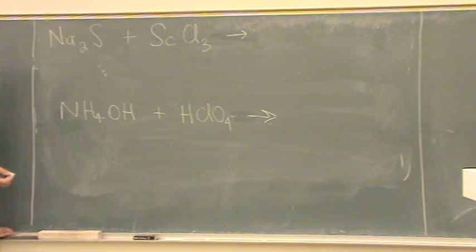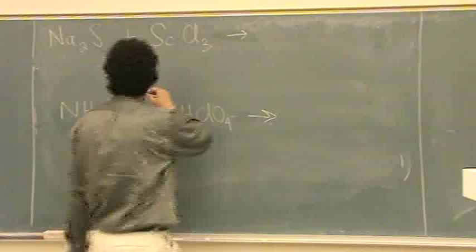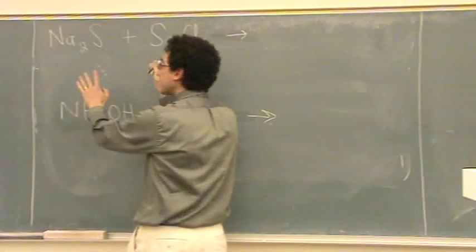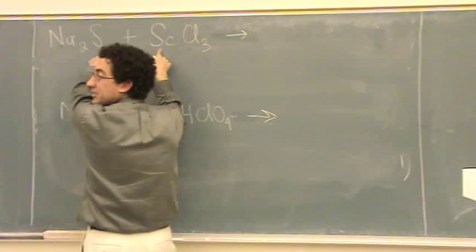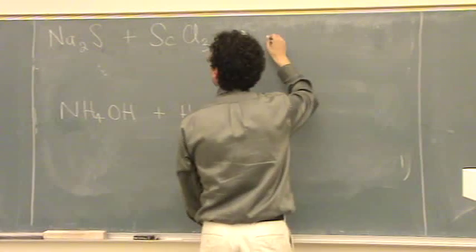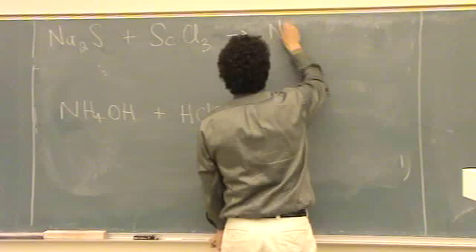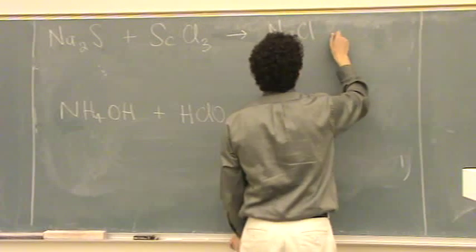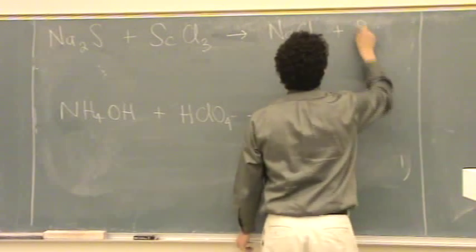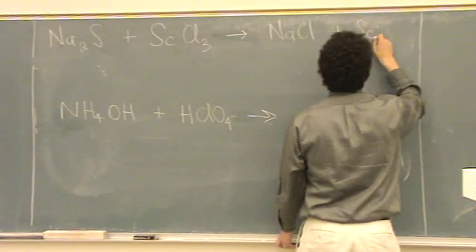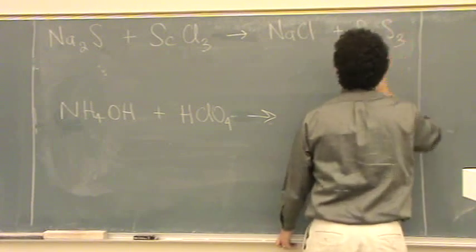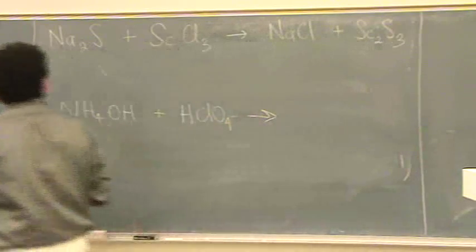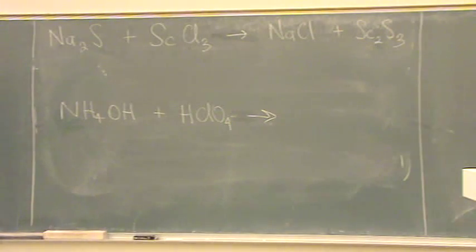Typically these are double replacements. You can see you've got two ionics, they have to be. So it'll be sodium chloride and scandium sulfide. Okay, so we'll go NaCl plus Sc2S3. There's our double replacement.